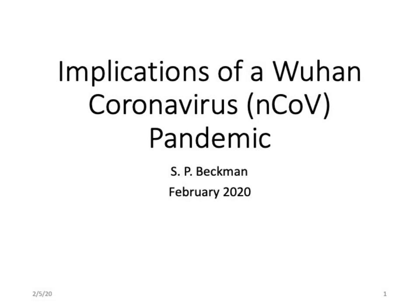In speaking with people, I've become aware that there is a general misunderstanding of the implications of what a two percent fatality rate means in association with the Wuhan coronavirus — in particular if it does become a pandemic in which the majority of the population becomes infected. I thought I would prepare this brief presentation to show how to calculate the effect of a fatality rate on the population and on an individual's surroundings, and talk about the uncertainty we have in our understanding as of now.